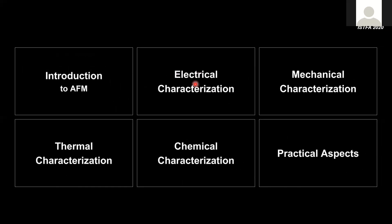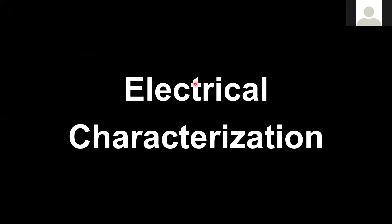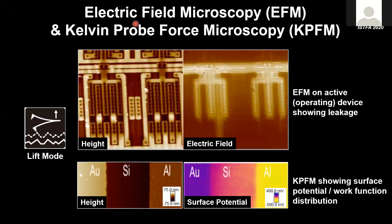Let's move into the biggest category, which is electrical characterization — biggest in failure analysis at least. One relatively popular method is to use the AFM tip to do an electric field measurement related to charge or voltage distribution. Here we're looking at an operating device where voltages are present. We measure topography and simultaneously measure the electric field emitted by the device. Metal lines with voltage applied show up as higher electric field, and leakage to a grounded area also shows up as higher electric field.